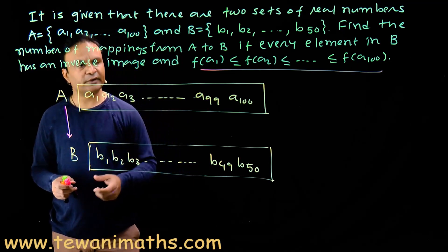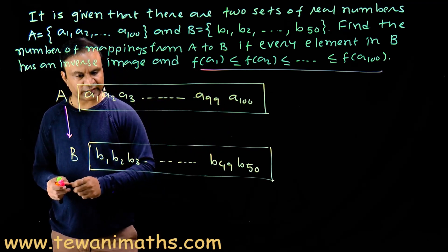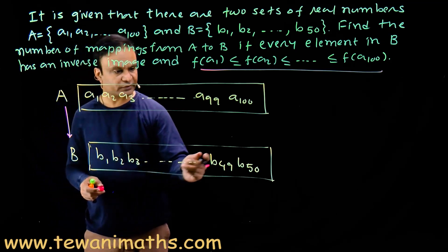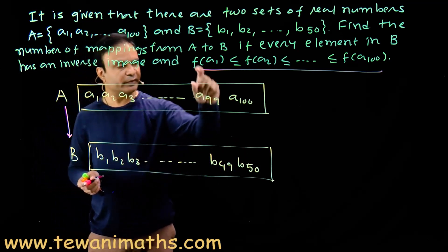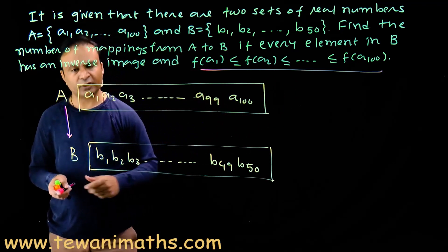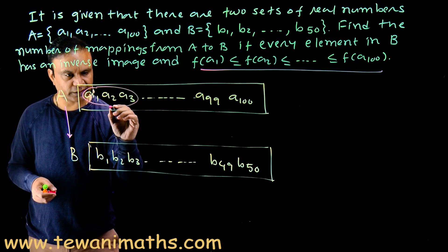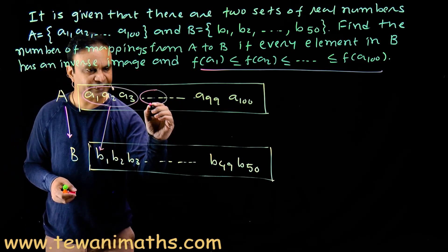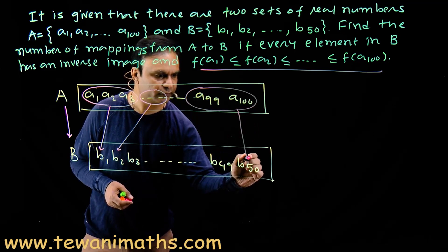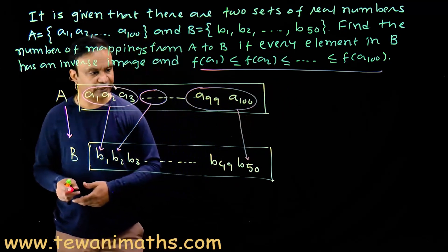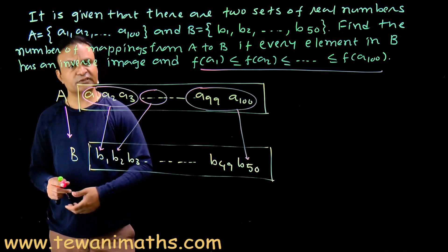We form 50 non-empty groups from these 100 elements, maintaining the order of these values. Here we assume B₁ < B₂ < B₃ < ... < B₅₀, meaning these values are in ascending order. To maintain this order, we form 50 non-empty groups. Suppose the first group has three elements — it will be assigned image B₁; the second group will be assigned image B₂; and the last group will be assigned image B₅₀. In that case, the order of values is maintained, so there will be a one-one correspondence between the 50 non-empty groups and the elements of set B.